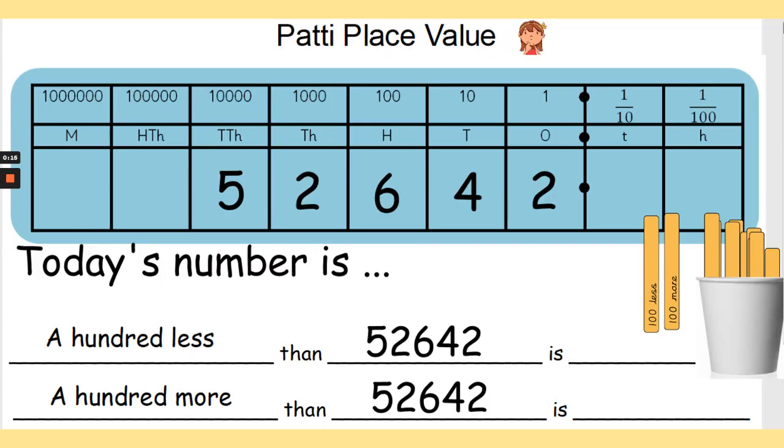Okay, let's begin. So we are starting with Patti Place Value. And today's number is 52,642. And I've taken out the sticks 100 less and 100 more. So that's what I would like you to find of this number. So you need to find 100 less than 52,642 and 100 more than 52,642. Pause the video now and complete your sentences.